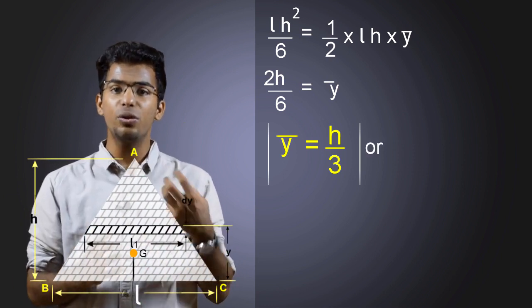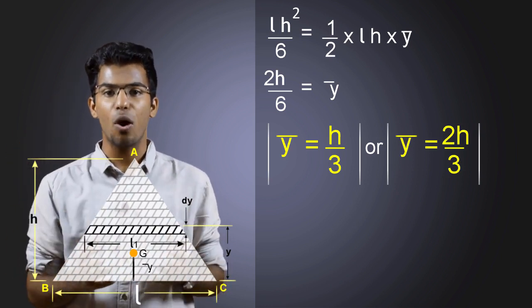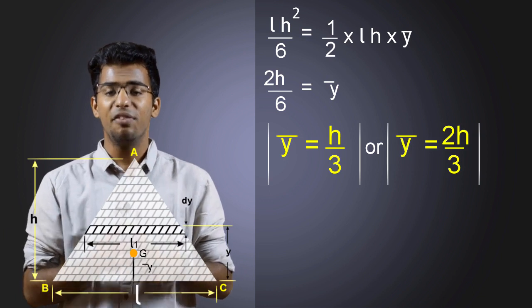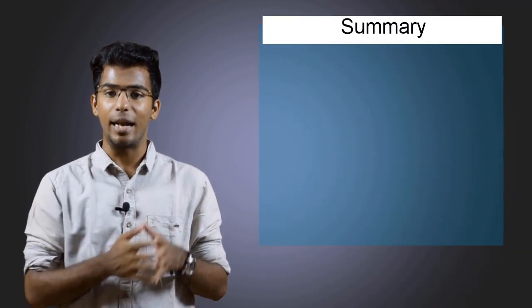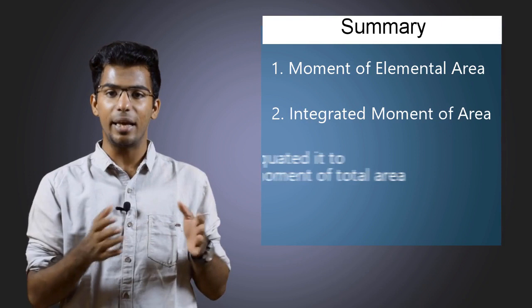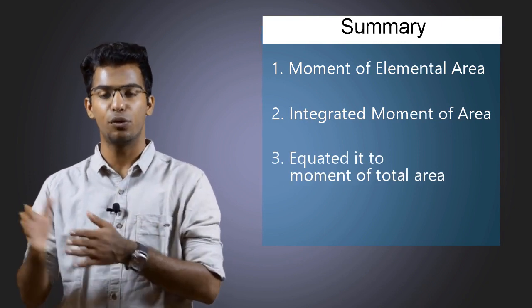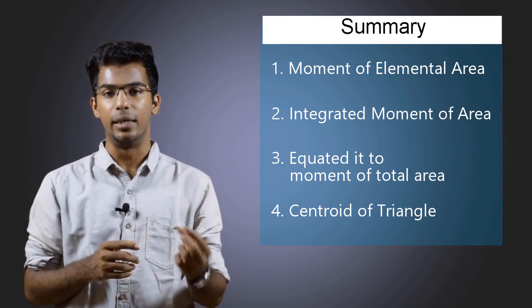In other words, we can also take it as two-thirds of the height from the top. So that's the centroid of a triangle — we get it in terms of the height of the triangle. To sum up what we have learnt: we considered an elemental area, calculated its area and moment, integrated the elemental areas, and equated the moment of total area. At last, we derived the expression for the centroid of a triangle in terms of height. In the next video, we will derive the expression for the centroid of another simple shape. See you there.